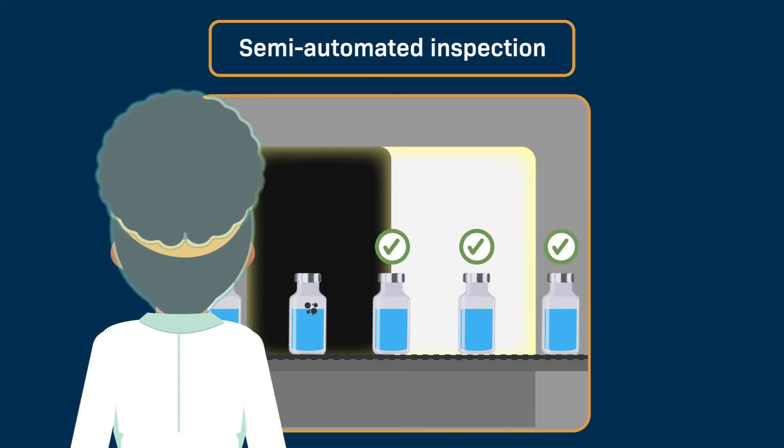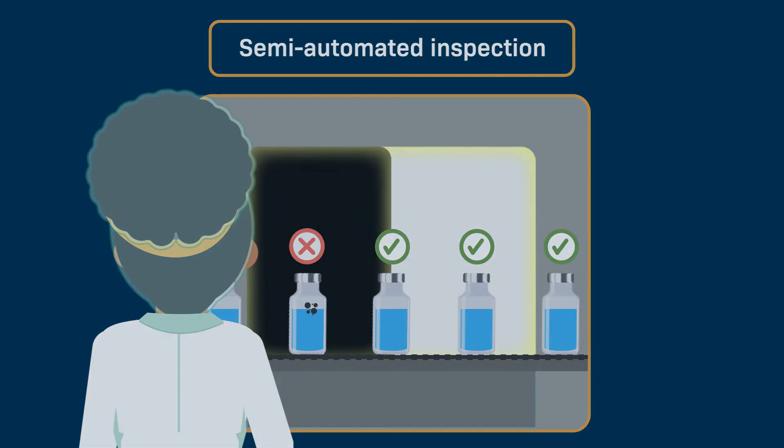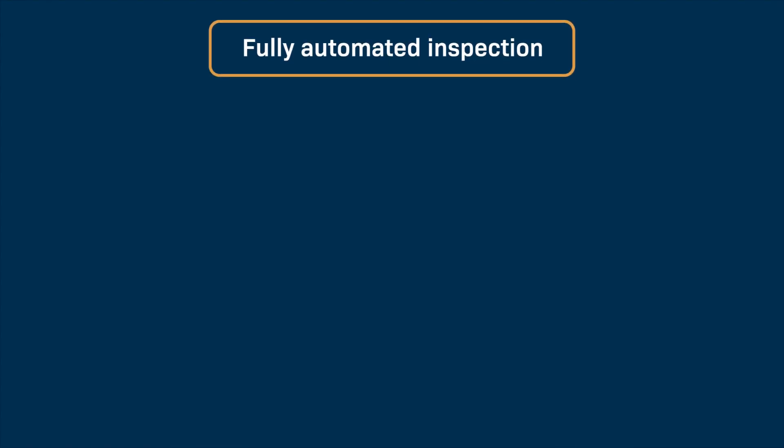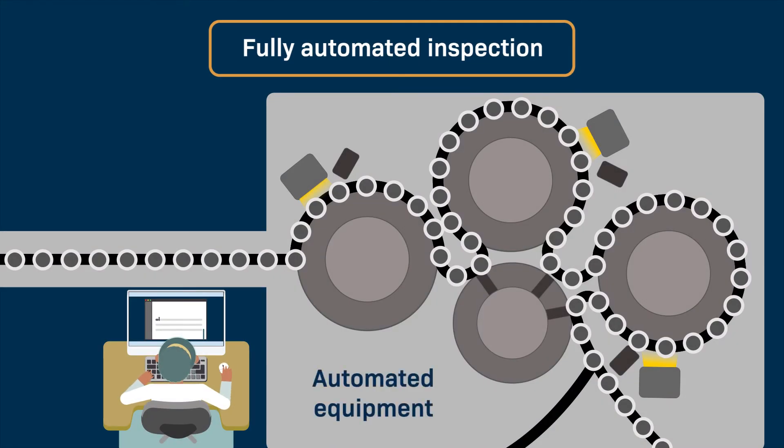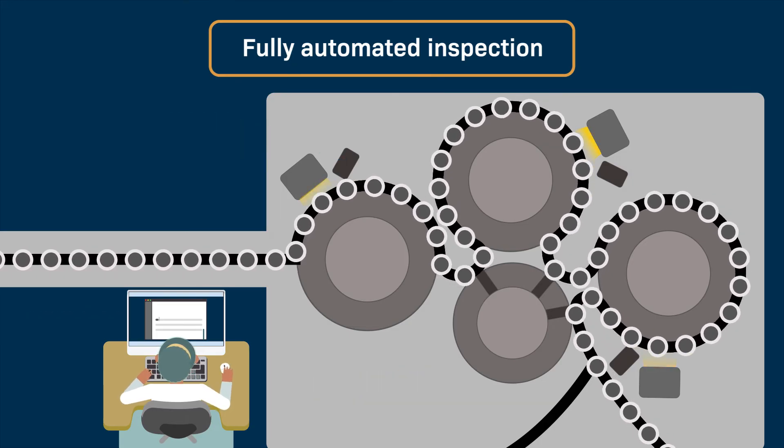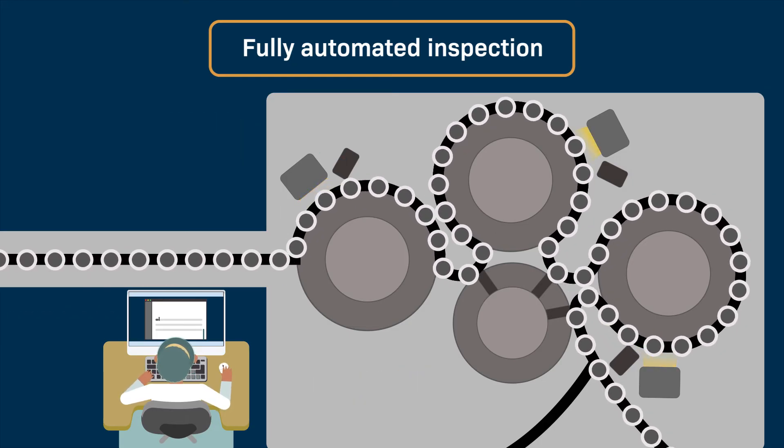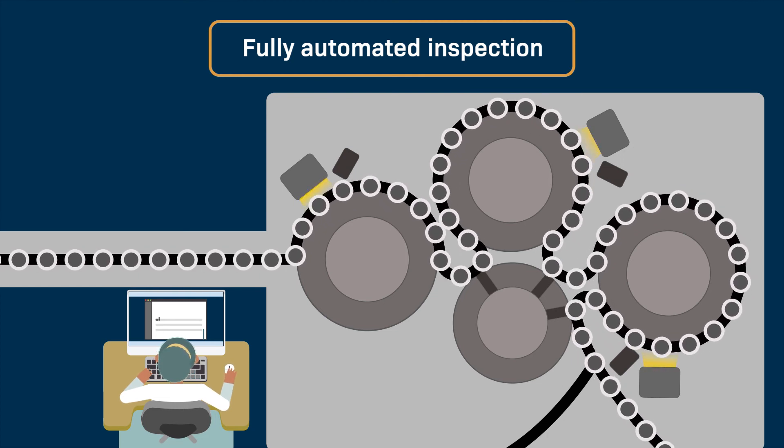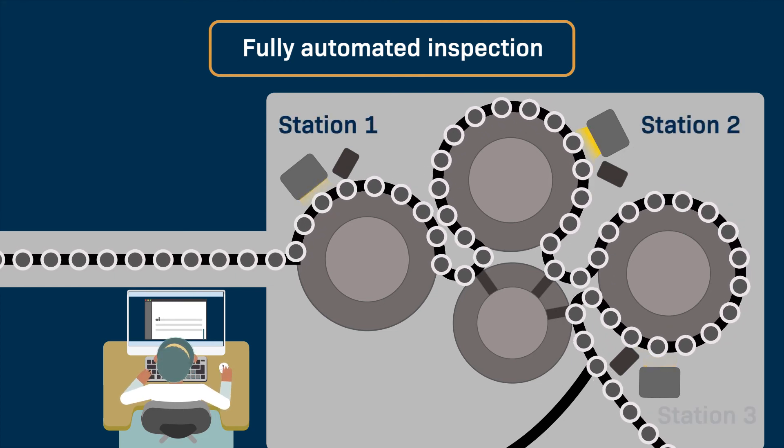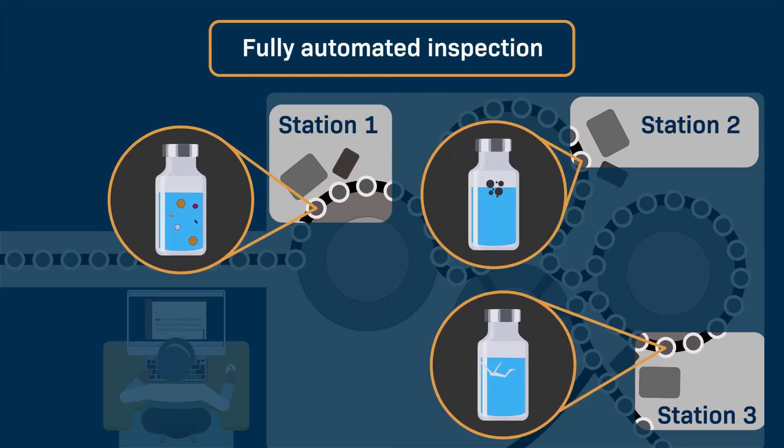In the fully-automated visual inspection process, automated equipment, which uses sensors and computer algorithms, handles each container and performs the visual inspection. The automated equipment moves the containers through multiple stations, where sensors take images of different sections of each container to detect defects.